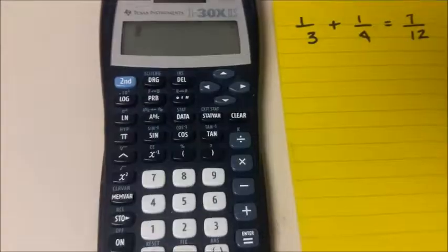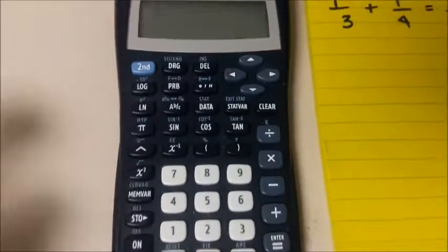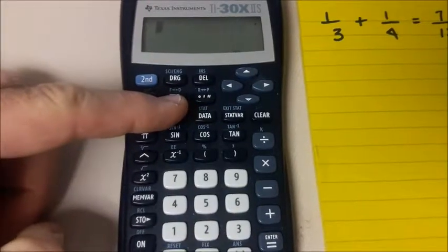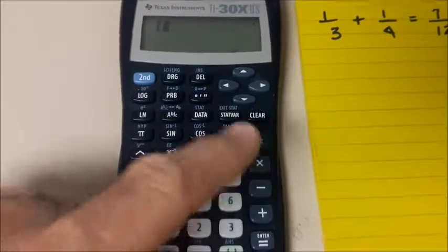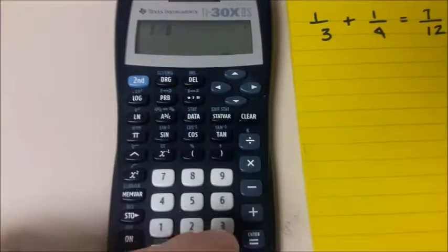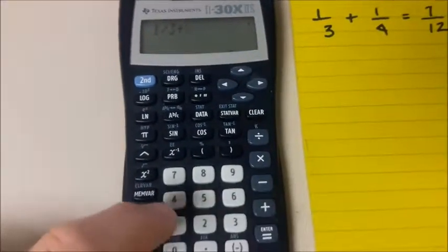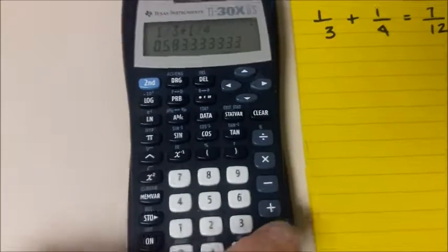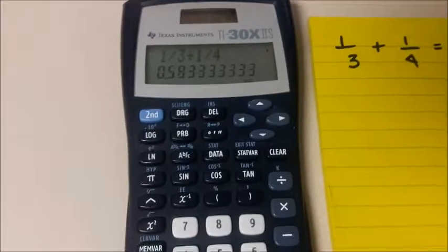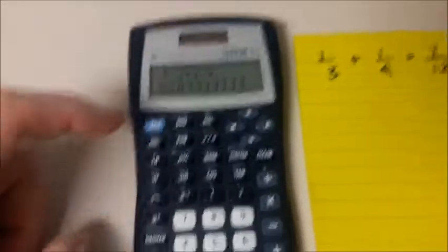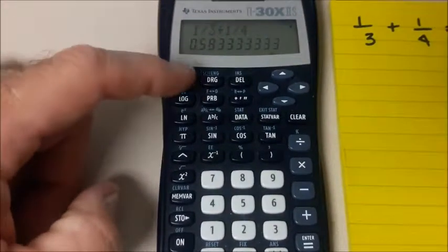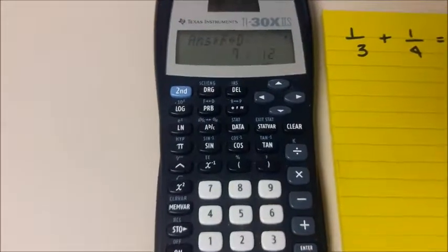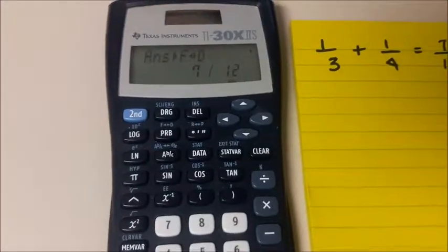So we can do the same problem with a different calculator. The conversion key is right there, f to d, so we will do 1 divided by 3 plus 1 divided by 4. There is the approximation, and then we will convert that to a fraction form. 2nd, and there it is, 7/12.